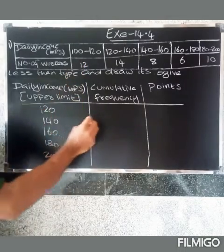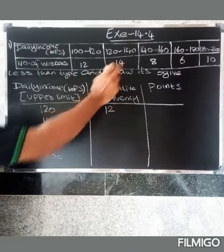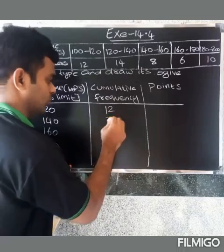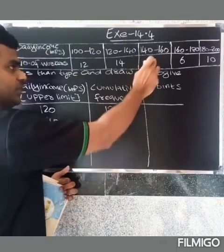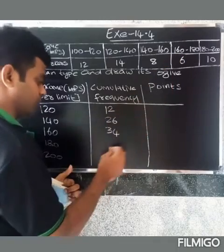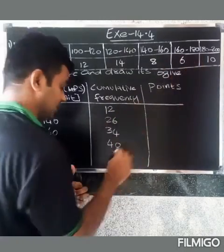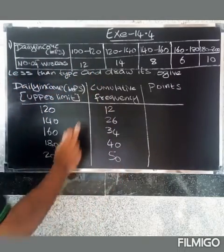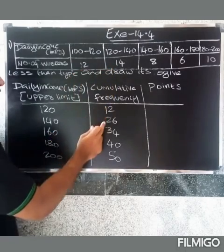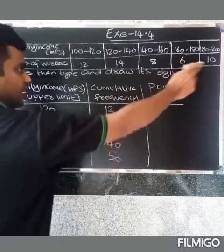The first cumulative frequency is 12. Next, 12 plus 14 equals 26. Then 26 plus 8 equals 34. Next, 34 plus 6 equals 40. Finally, 40 plus 10 equals 50. So the cumulative frequencies are: 12, 26, 34, 40, and 50.